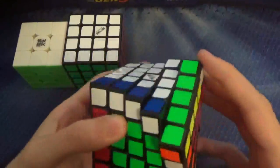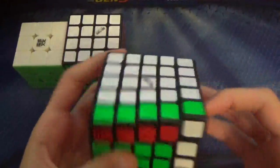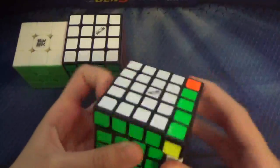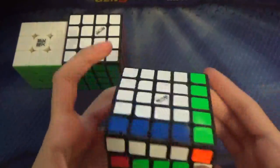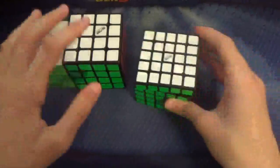The next event is 5x5. This is the QiYi Wushuang. My goal is a sub-124 average, at least sub-124. And then single-wise, just sub-120, I guess.